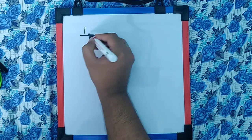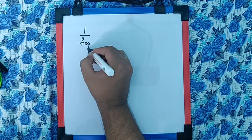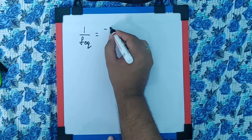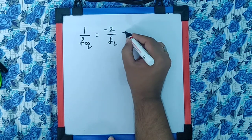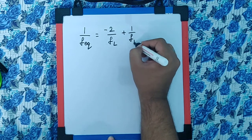Here I can say 1 by f equivalent for silvering of lens is minus 2 by f of lens, that is the focal length of the lens, plus 1 by focal length of the mirror.